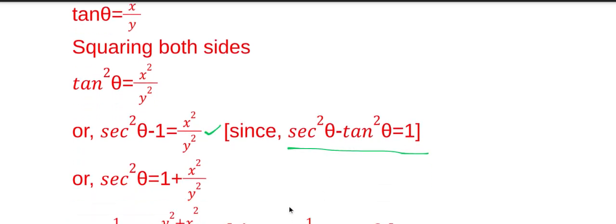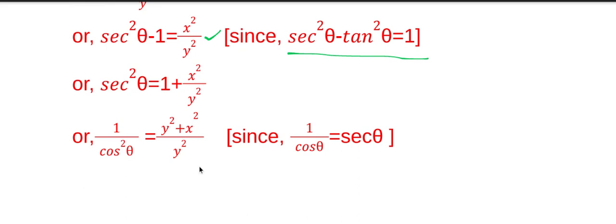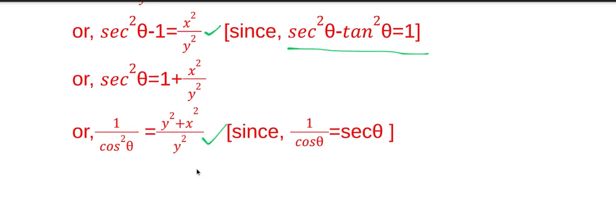Simplifying, sec square theta equals 1 plus x square by y square. Since sec theta equals 1 by cos theta, so sec square theta equals 1 by cos square theta, that is equal to y square plus x square divided by y square.